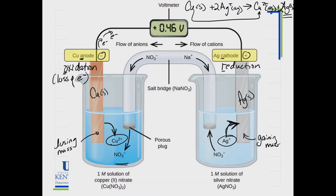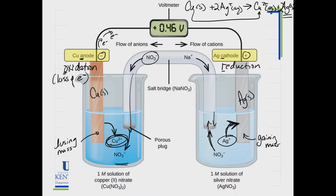If we are forming Cu²⁺, we are adding positive charges into the left beaker. You can't have a positive charge without a negative charge coming in, so nitrate ions flow in through the porous plug — something as simple as cotton — which allows ion migration without transferring liquid. On the right side, silver ions are plating out, so we're losing cations; either anions must leave or cations must flow in. Remove the salt bridge and nothing happens.